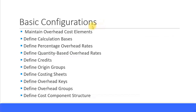Now let's look at some basic configurations we will be covering in this section. First, we will maintain the overhead cost elements. Then we look at defining the calculation basis, defining the percentage overhead rates, and quantity-based overhead rates. We also look at defining credits, defining origin groups, defining the costing sheet, and defining overhead keys. We'll also look at overhead groups and defining the cost component structure — I will go through each one in detail.